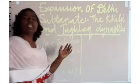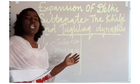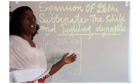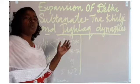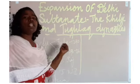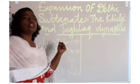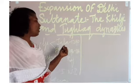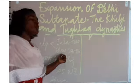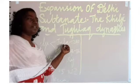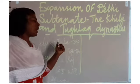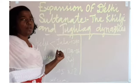Jalaluddin Khalji was a pious ruler. He supported and forgave the nobles and other rebellious people who rebelled against him. By using this generosity of Jalaluddin Khalji, Alauddin Khalji killed Jalaluddin Khalji and came into power.